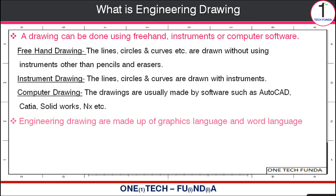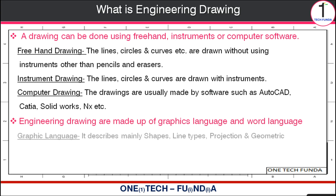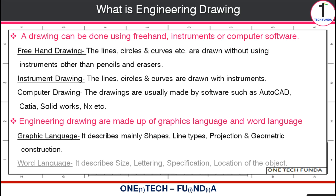Engineering drawings are made up of graphic and word language. In graphic language, it describes mainly shapes, line types, projection and geometric construction. In word language, it describes size, lettering, specification and location of the object.